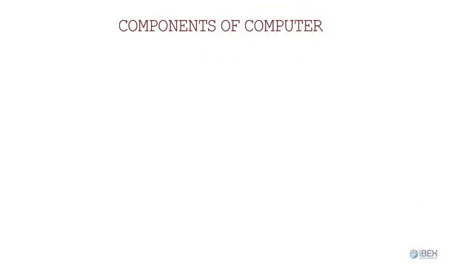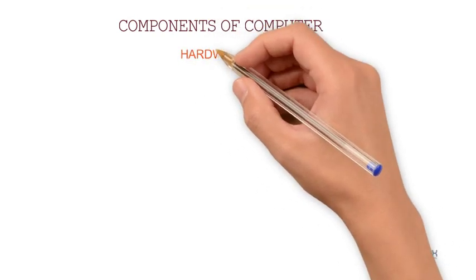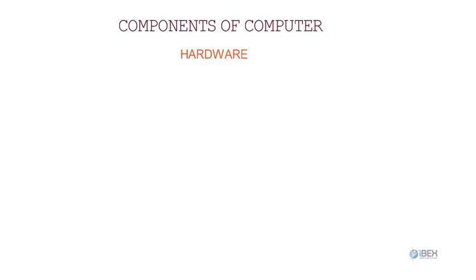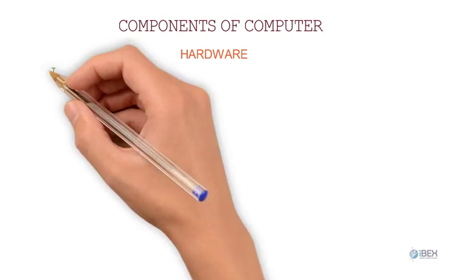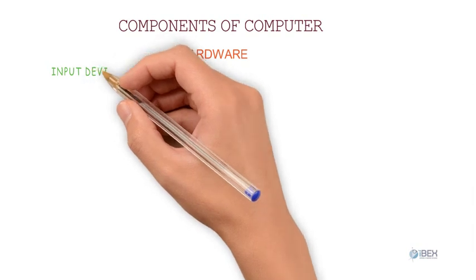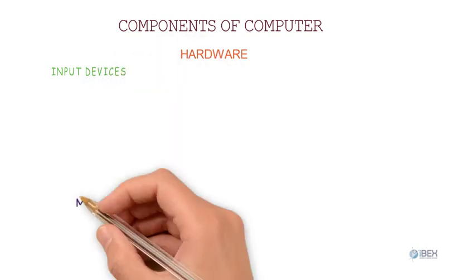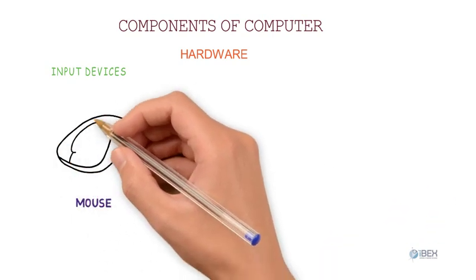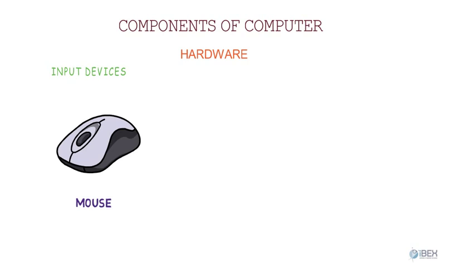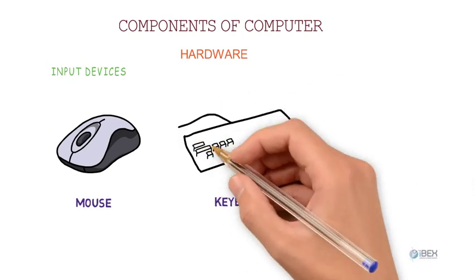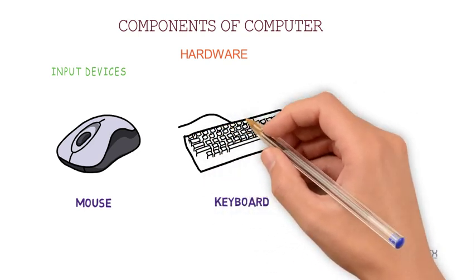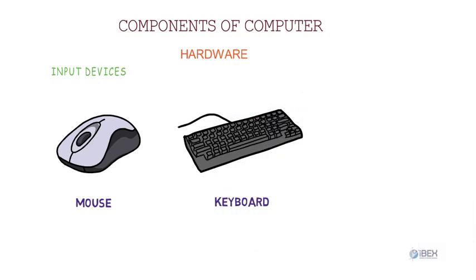Components of a computer — Hardware: A computer is made of different parts divided mainly into three categories. Input devices: Any hardware device that sends data to a computer, allowing you to interact with and control it. Mouse: The left button is used to select items and provide instructions by clicking an active area on the screen; the right button is used to display commonly used menu items. Keyboard: Used to input text including numbers, figures, and alphabets into the computer system.